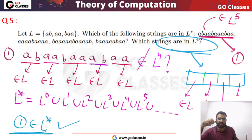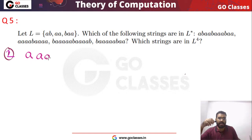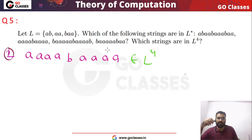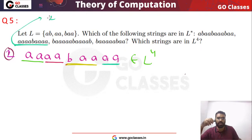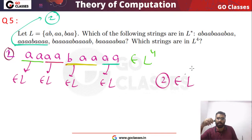Let's see the second string: AAAABBAAA. If this string belongs to L power 4, it must be breakable into 4 parts, each a string of L. We can take AA, then AA, then BBA — wait, let me re-read — AA, AA, BAA, and then A. We can divide it into four parts: AA | AA | BAA | A — each is a string of L. So this second string belongs to L power 4, and therefore also to L star.